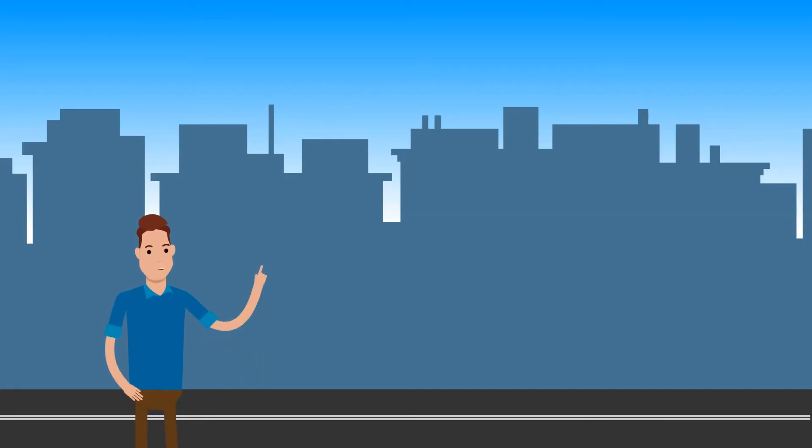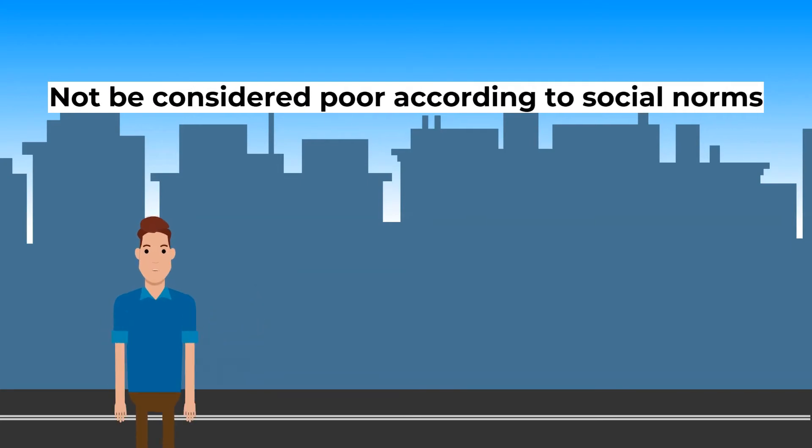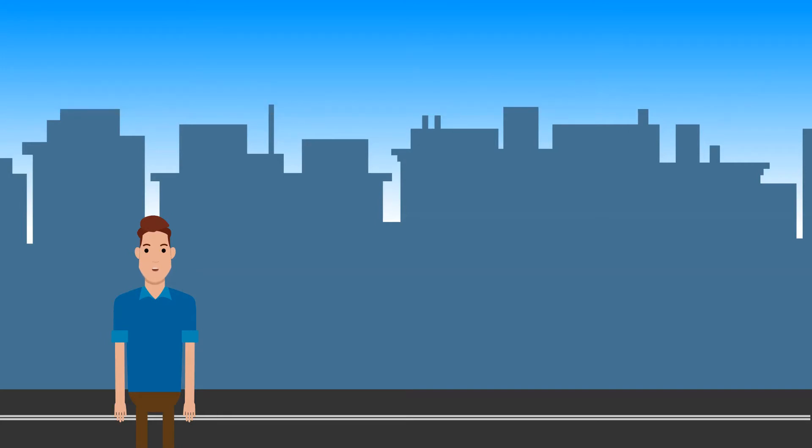Another way of defining relative poverty is those who cannot afford to buy goods which they need to buy in order to not be considered poor according to social norms, for example, an electric fridge or mobile phone.